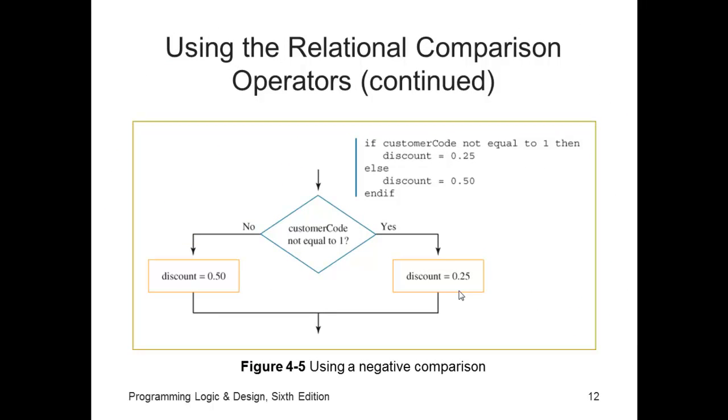Here's some example flowchart and pseudocode using a negative comparison. Is the customer code not equal to 1? If the expression evaluates to true, or yes, in other words, the customer code is not 1, then the discount is 0.25. If the customer code not equal to 1 evaluates to false, which, think carefully, that means the customer code is equal to 1, then the discount is 0.50. Here's that pseudocode to match it. Customer code not equal to 1, then discount's 0.25. Otherwise, discount's 0.50.